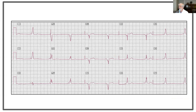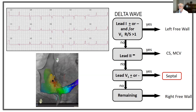This next example is much more obvious. Using the same simplified algorithm, the accessory pathway was likely septal in location. At ablation in the LAO view, the coronary sinus and septum are visible, the yellow dot marks the His bundle location, and this was a mid-septal accessory pathway — a little tricky to ablate, but the procedure went well.